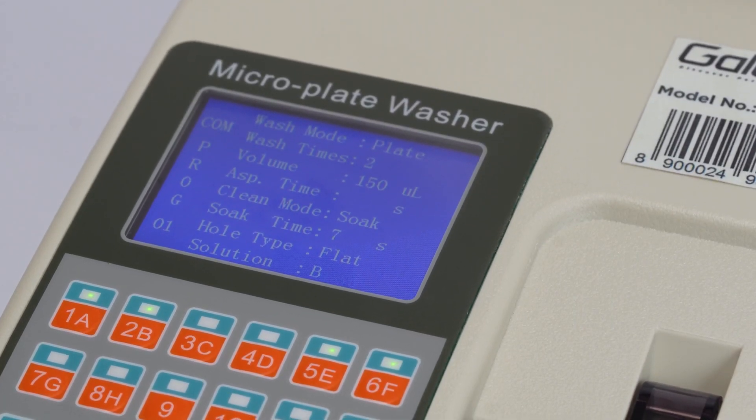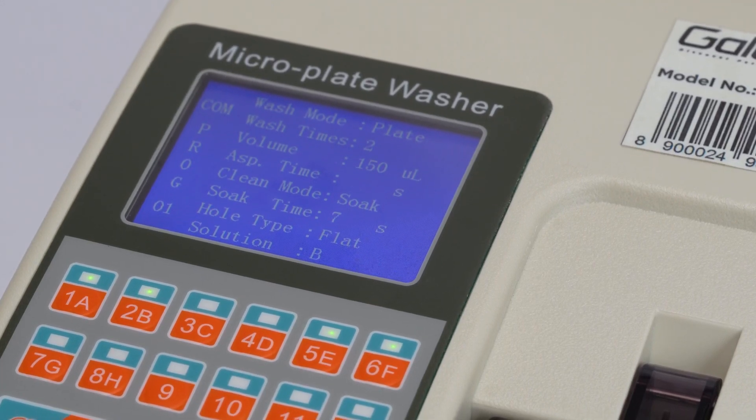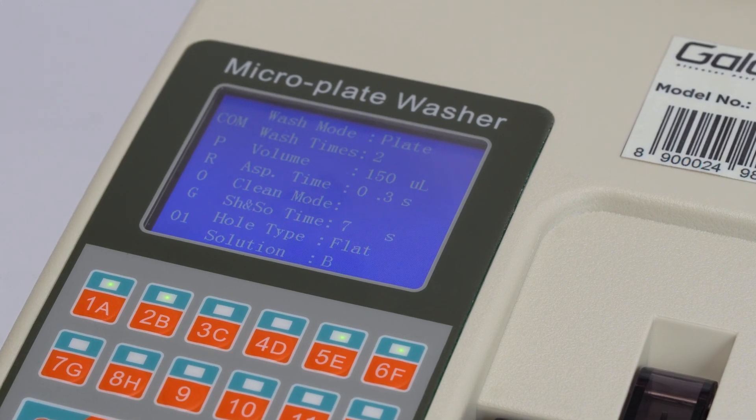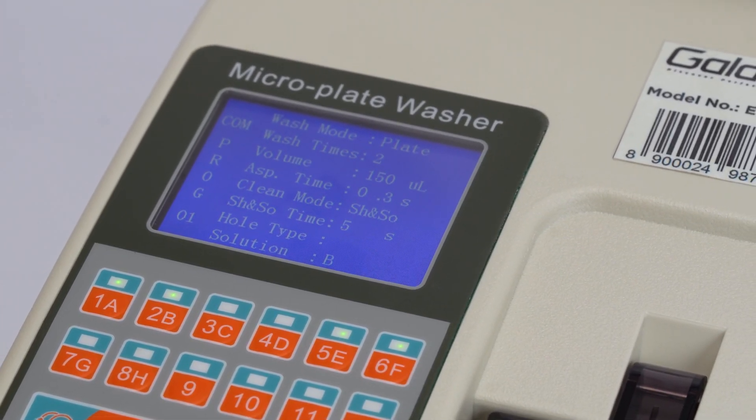Set aspirating time from 0.1 to 9.9 seconds in 0.1 second increments. Select clean type: soaking, shaking, soaking and shaking. Choose hole type: flat bottom, round bottom, U shape, or V shape.